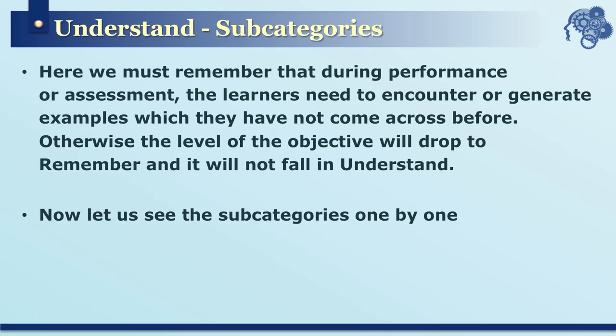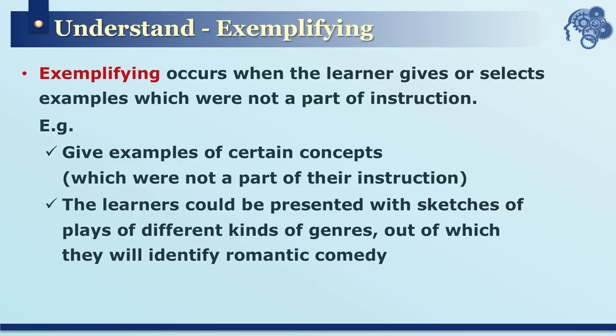The first subcategory of understand is interpreting, which means converting information from one representational form into another. For example, paraphrasing, writing a summary, looking at a picture and writing its description, building a story based on a picture, or reading a description and drawing a picture based on that description — such conversions are termed as interpreting.